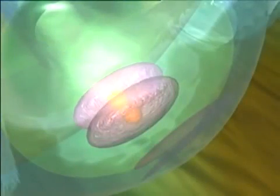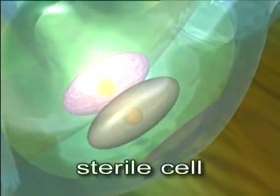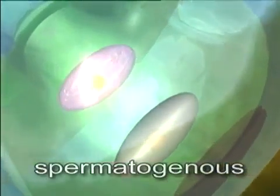The generative cell soon divides, forming a sterile cell and a spermatogenous cell. Both of these then move into the growing pollen tube.